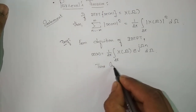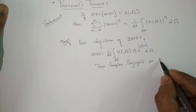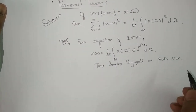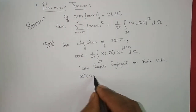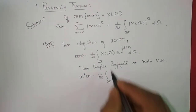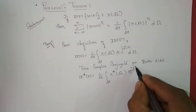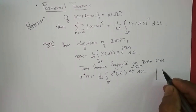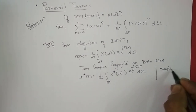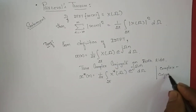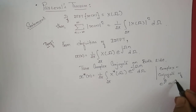We shall take the complex conjugate on both sides. So what we end up with is: x*(n) is equal to 1 over 2π, integrating over 2π, of X*(ω) e^(−jωn) dω. This follows from the fact that the complex conjugate of e^(jθ) is e^(−jθ).